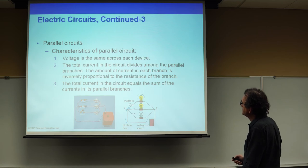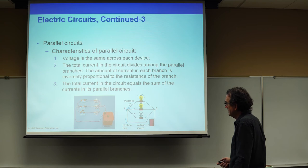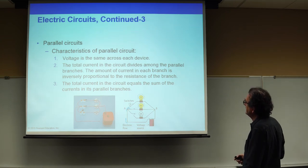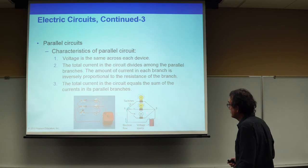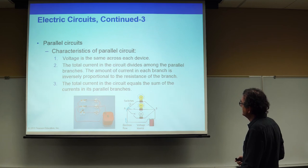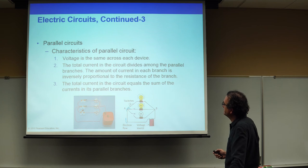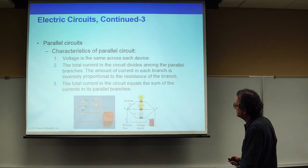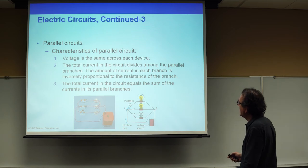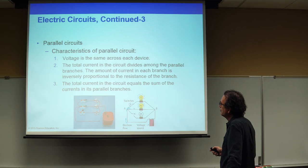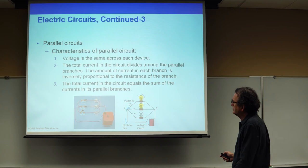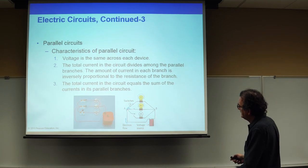The total current in the circuit divides among the parallel branches. The voltage difference across each lamp equals current times resistance — that's Ohm's law. The total current in the circuit equals the sum of the currents in its parallel branches. If each lamp carries one amp of current, then all three on means three amps at the supply point, which then splits into one amp into each branch and recombines into three amps on the other side.